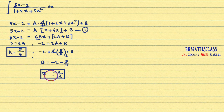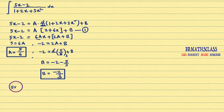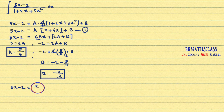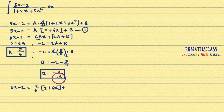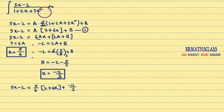Now I will substitute the values of a and b back into equation 1. We get 5x minus 2 equals (5/6) into (2 plus 6x) plus (−11/3). In the integral, in place of 5x minus 2, we can write this expression.